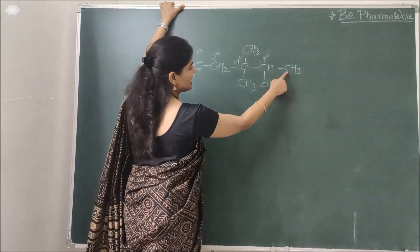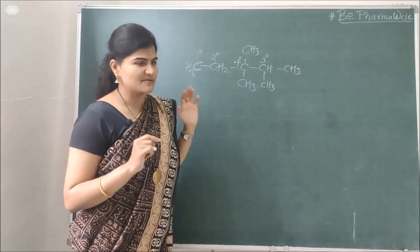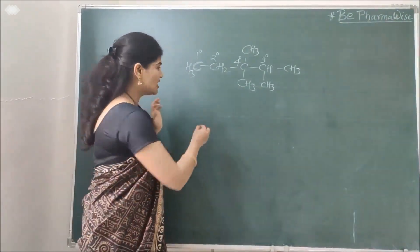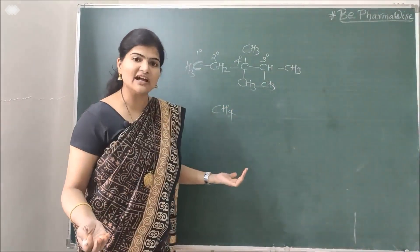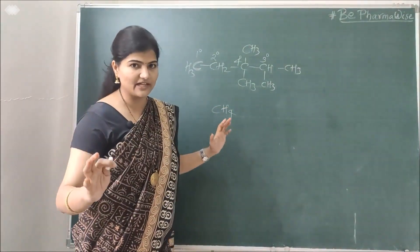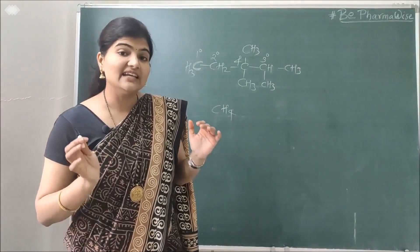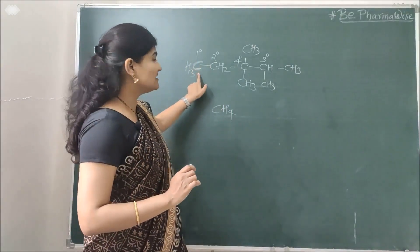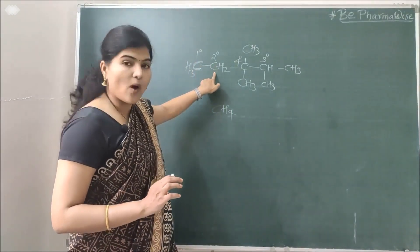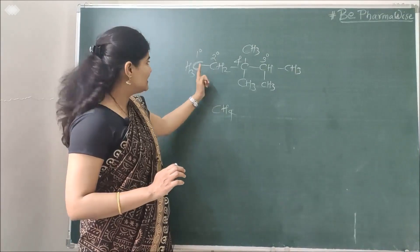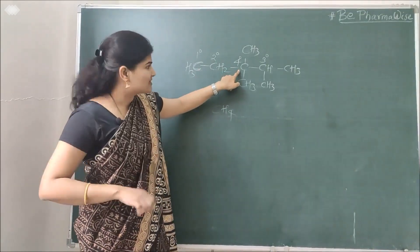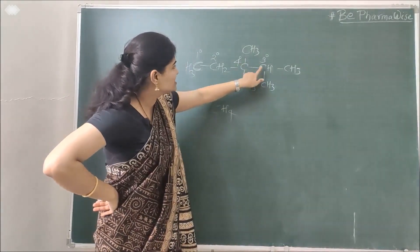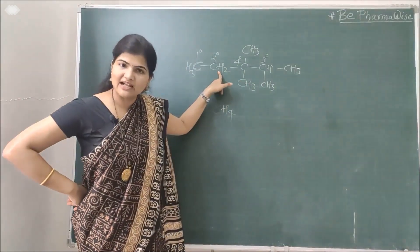Terminal carbons are always primary carbon atoms because they are attached to one other carbon — or even no other carbon, as in methane — but they are still considered primary. So carbon atoms are classified into four types: primary, attached to one other carbon; secondary, attached to two; tertiary, attached to three; and quaternary, attached to four other carbon atoms.